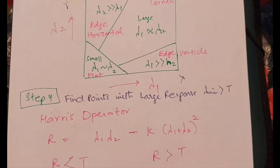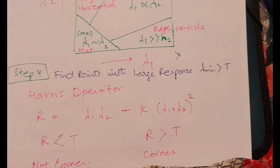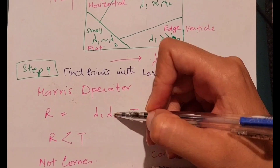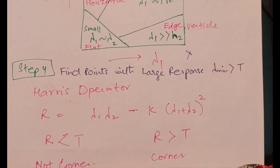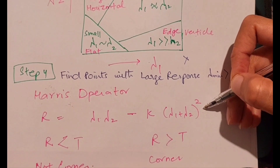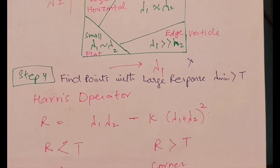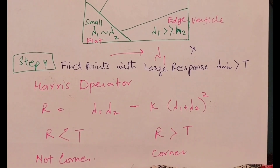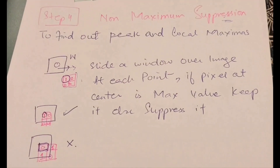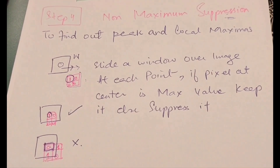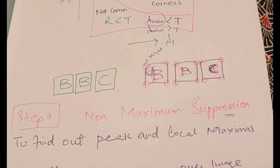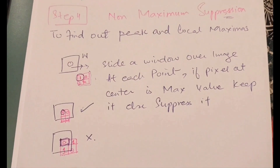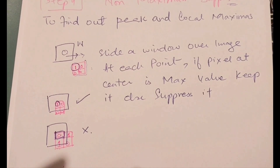Now let's relate this analysis to the Harris operator. In the Harris operator, an additional value R is calculated: R = lambda1 * lambda2 − k * (lambda1 + lambda2)^2. This R is compared with a threshold — when R is smaller than the threshold it is not a corner, and when larger it is a corner. We then apply non-maximum suppression to find the actual peaks and corners, eliminating extra points. This completes the corner detection process.